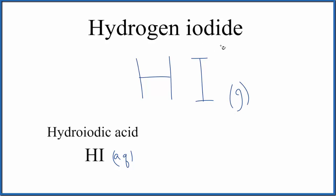So at standard temperature and pressure, hydrogen iodide will be a gas. The formula for hydrogen iodide is HI. It's a gas. But if you have this HI, hydrogen iodide, in water (aqueous), it becomes hydroiodic acid.